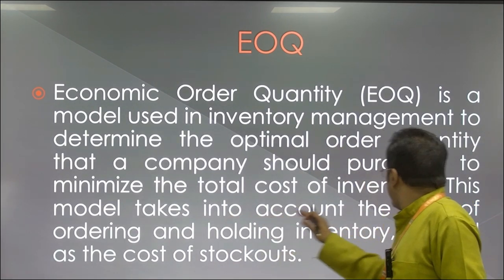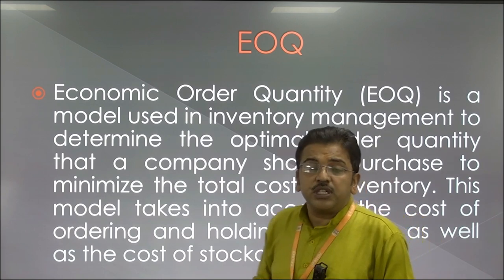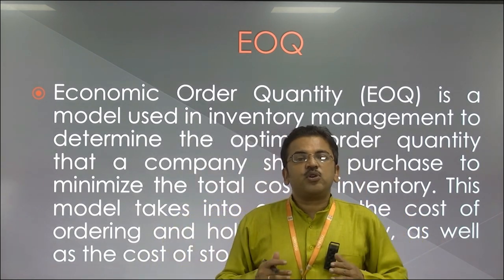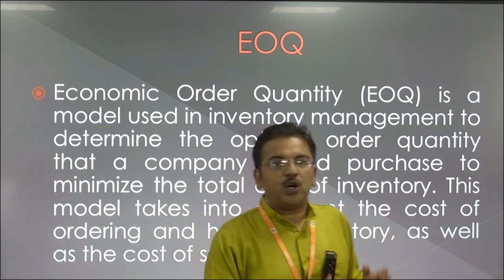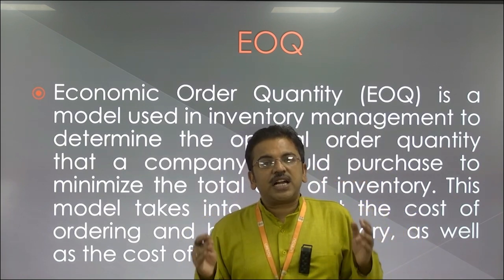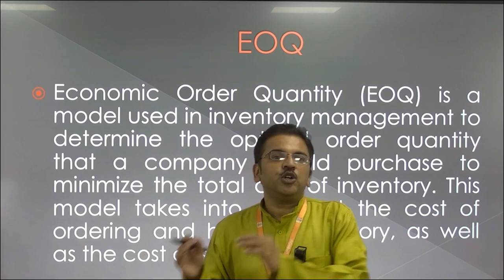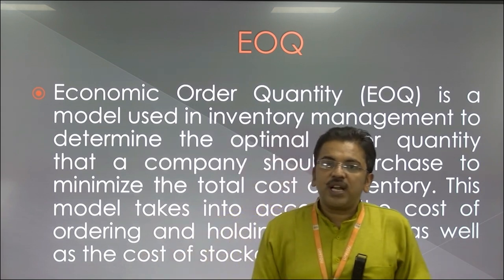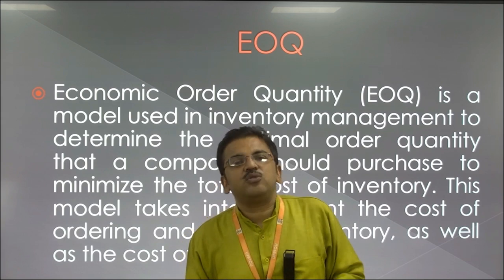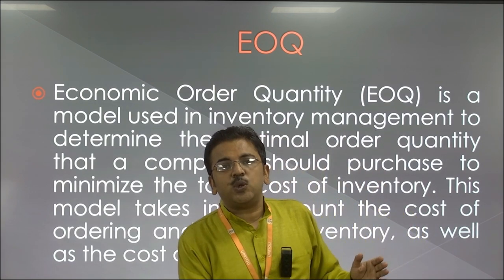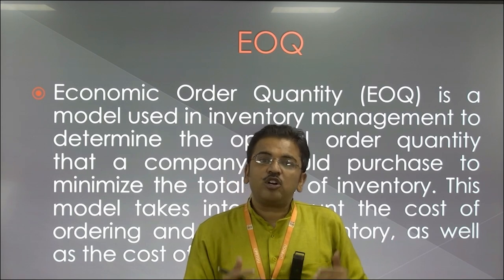This model takes into account the cost of ordering and holding inventory, as well as the cost of stock-outs. Holding cost is very important because whatever raw material you buy, you have to keep it in a specific warehouse, and for that you have to pay transportation costs to bring that raw material from the source to your company. This is known as holding cost, and the other is ordering cost.